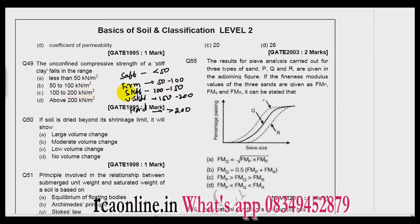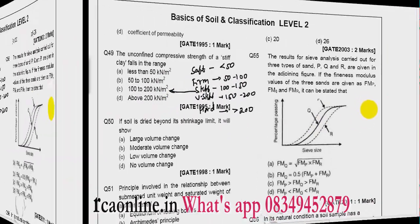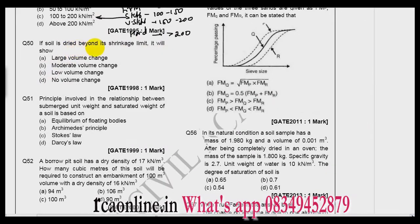Now question number 50: If soil is dried beyond its shrinkage limit, it will show no change in volume. Our curve is something like this. This is shrinkage limit, and beyond shrinkage limit there is no change in the volume, so this is the right answer.